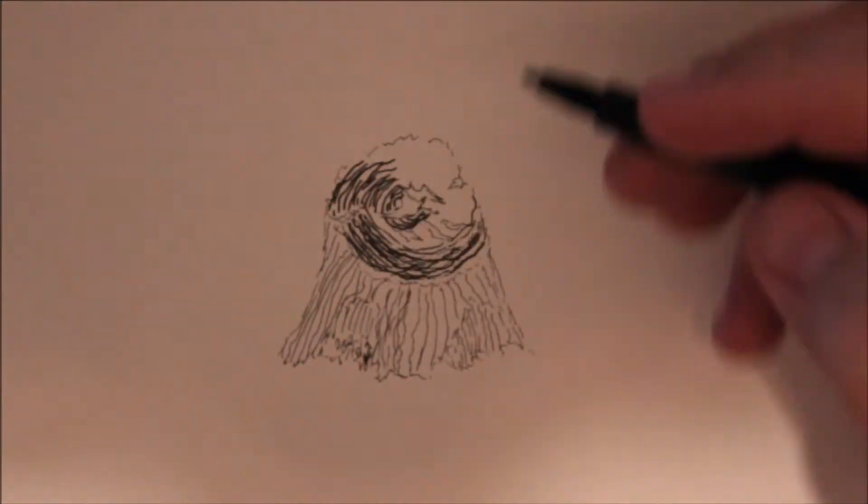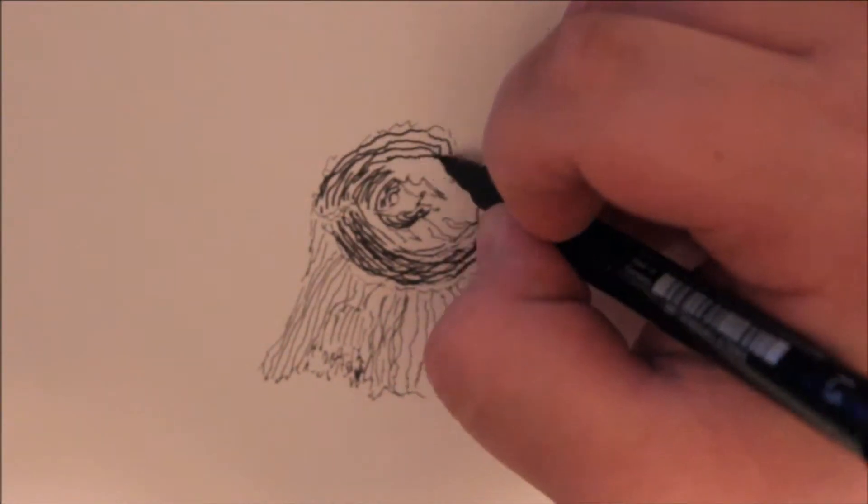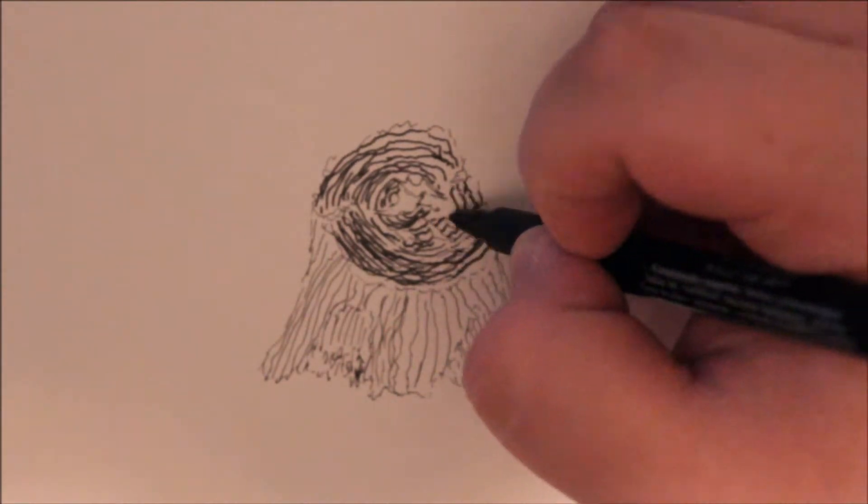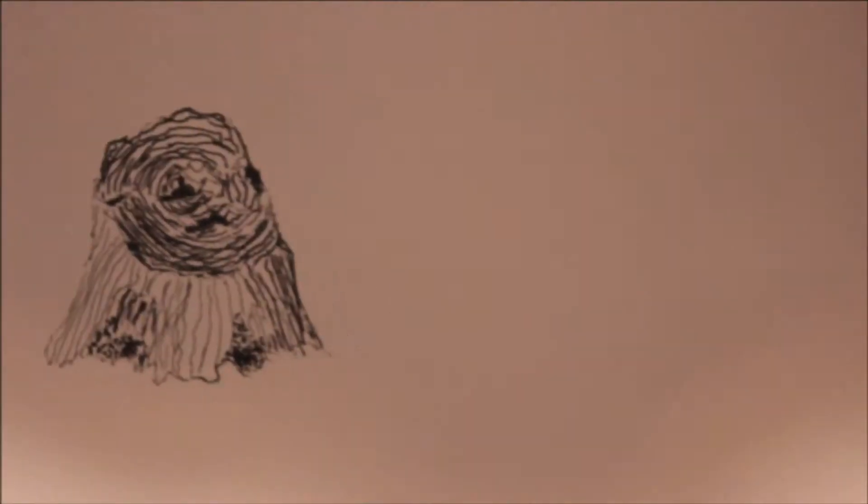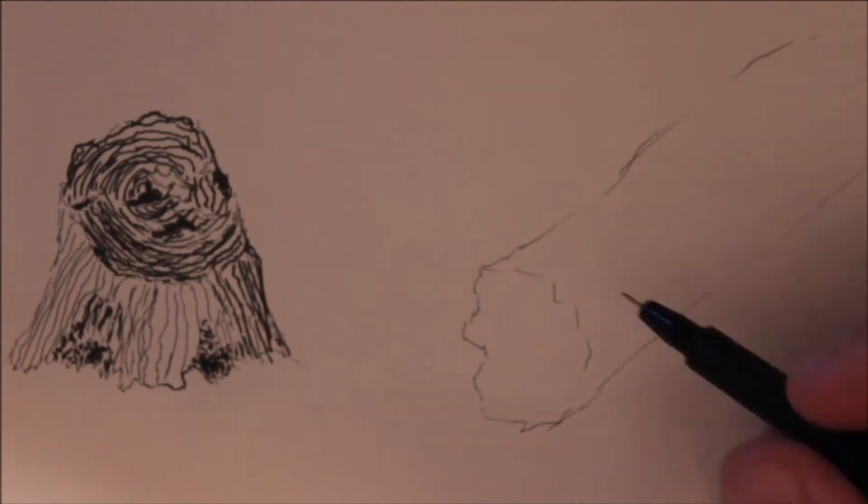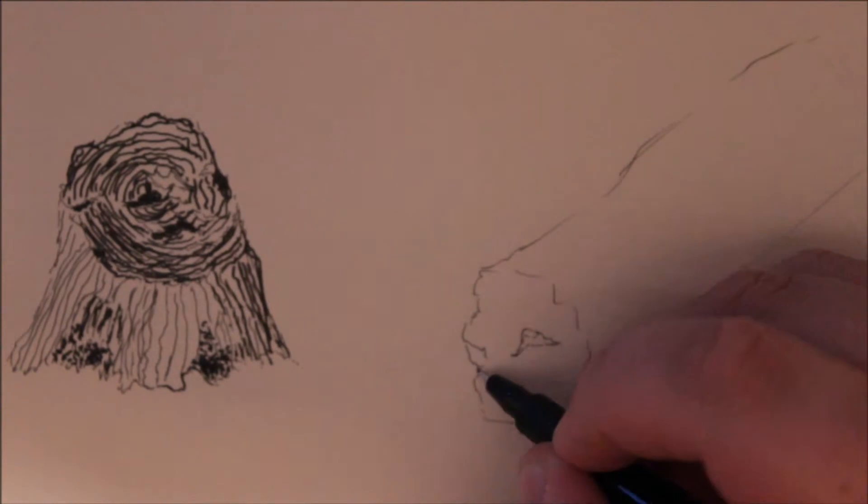And basically what I'm doing in this video is I'm breaking up the tree into three basic shapes: the trunk of the tree, the stump, and the branches that go upon the tree to better understand how the tree all comes together.